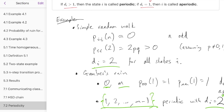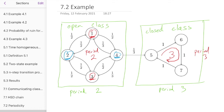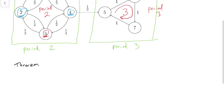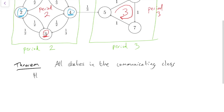So what we seem to be seeing here is that everything in the same class has the same period. It turns out that is true in general — that's actually a theorem. Theorem: all states in the same communicating class have the same period. This means we can actually refer to the period of a class rather than the period of a state, and if we have an irreducible Markov chain, we can refer to the period of the whole Markov chain. The proof of this theorem is a mandatory part of the course and is examinable, but I'll leave that in the notes for you to read yourself.